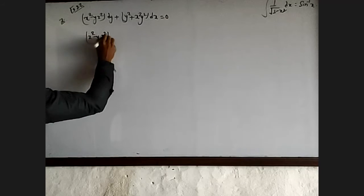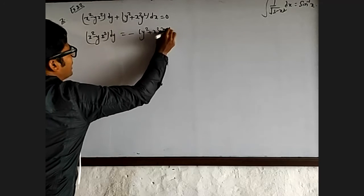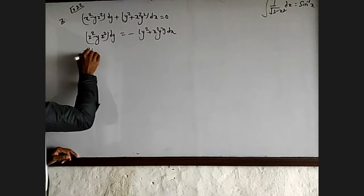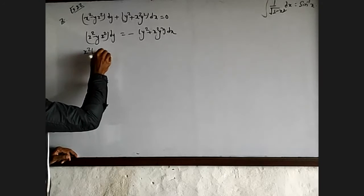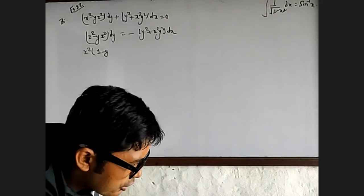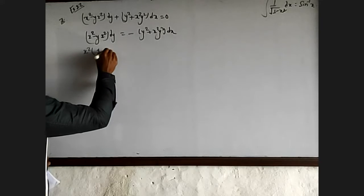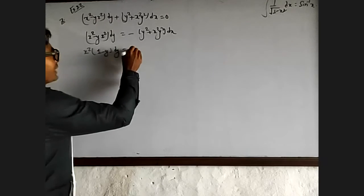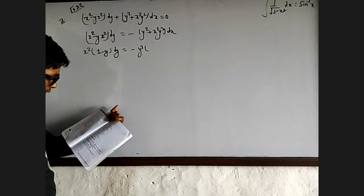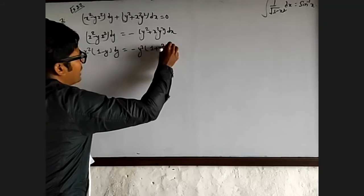Now for the next problem: dy equals minus y squared x squared y squared dx. So x squared is 1 minus y. Let's check the question — x squared is 1 minus y. This is dy with y squared, and one plus x squared dx.